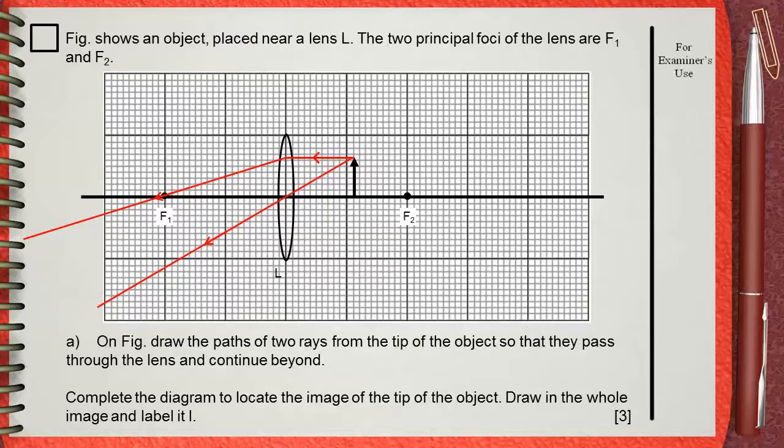For these rays, the one passing through the focus and the other passing through the optical center undeviated, the point of intersection. This is the image of the tip of the object.